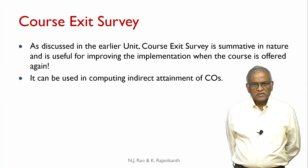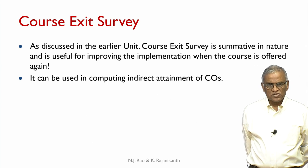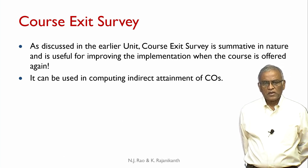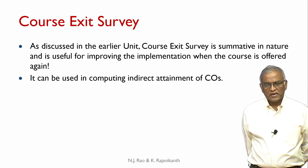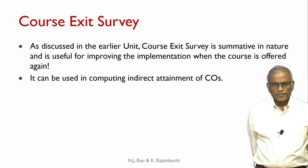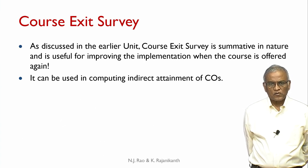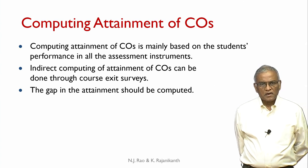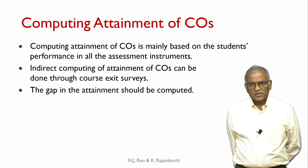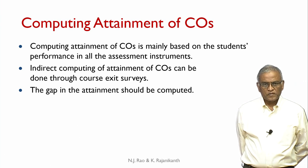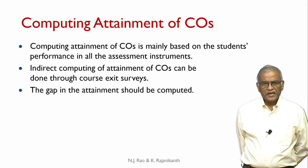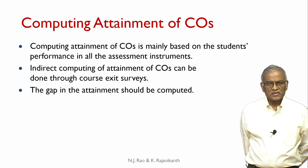The course exit survey, as discussed in the earlier unit, is summative in nature and is useful for improving the implementation of the course when offered again. It can also be used in computing the indirect attainment of COs. You measured the attainment of COs directly and indirectly — the course exit survey results will be used for computing indirect attainment. Computing attainment of COs is mainly based on students' performance in all assessment instruments, and the gap in attainment should be computed.